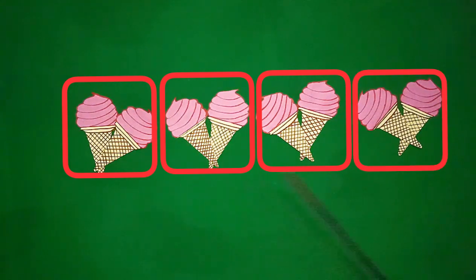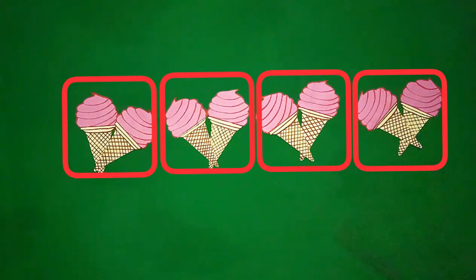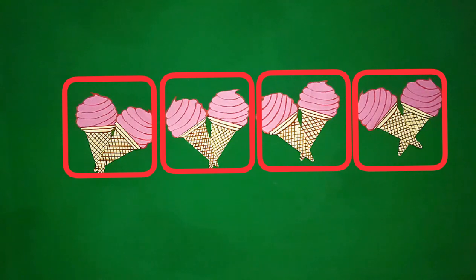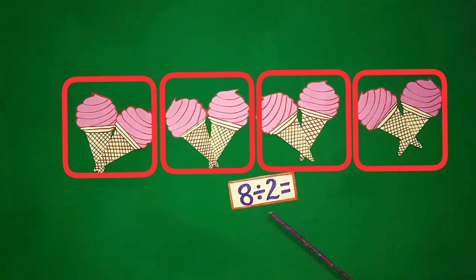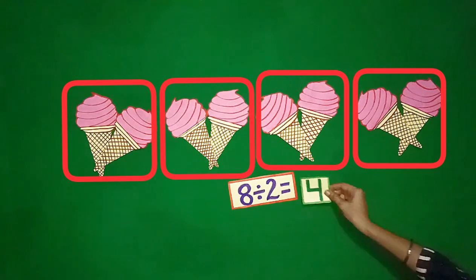Students, how many groups are there? Let's count: 1, 2, 3, 4. There are 4 groups of 2 ice creams. So, when we divide 8 ice creams into groups of 2, we get 4 groups.